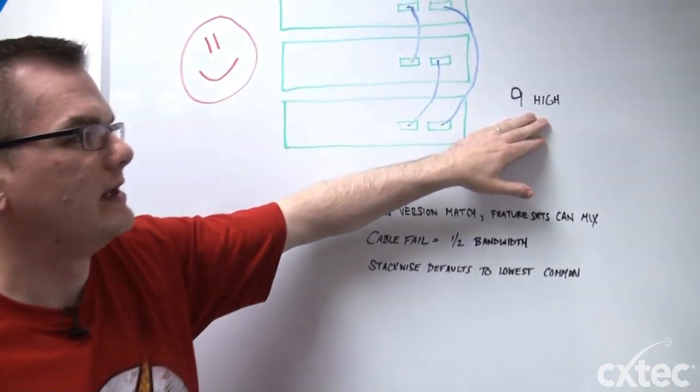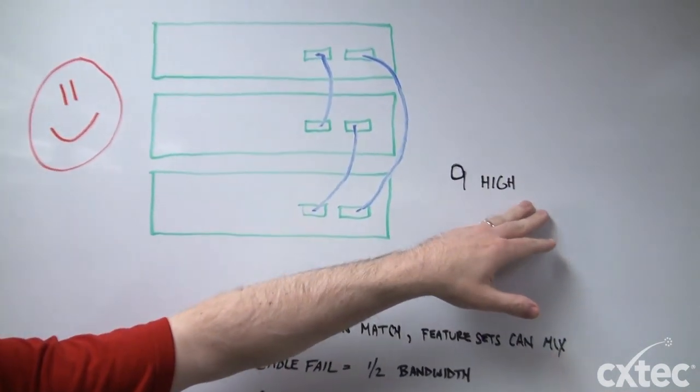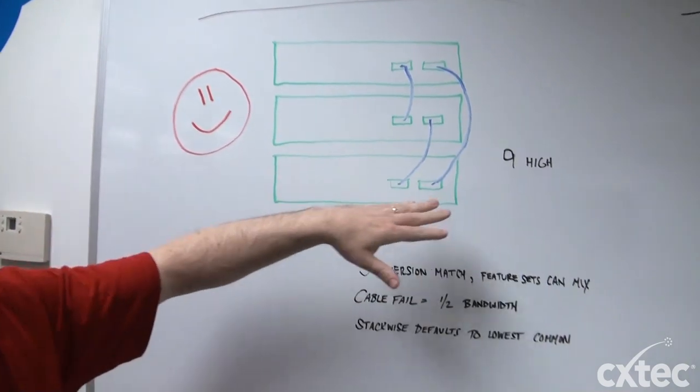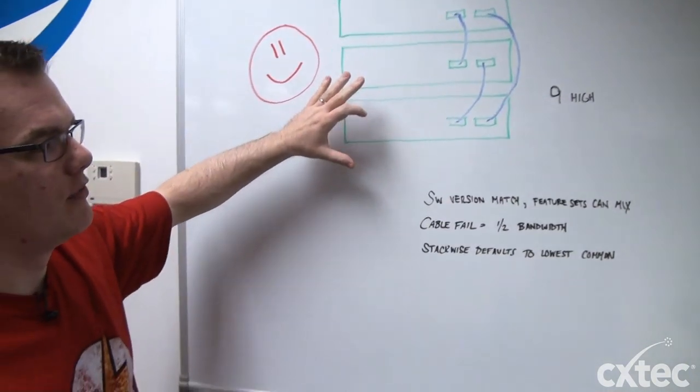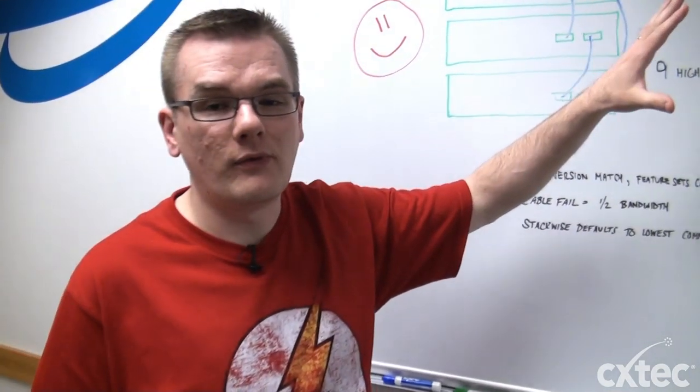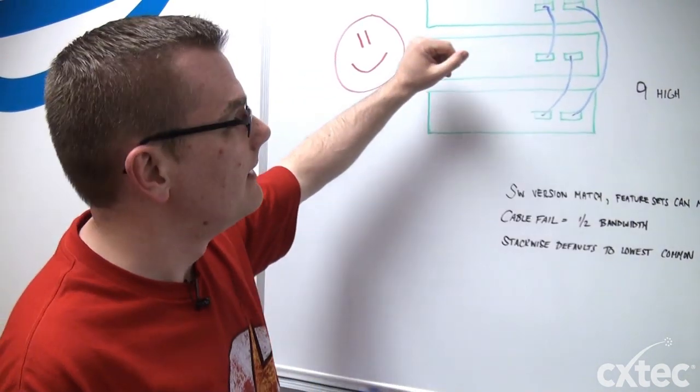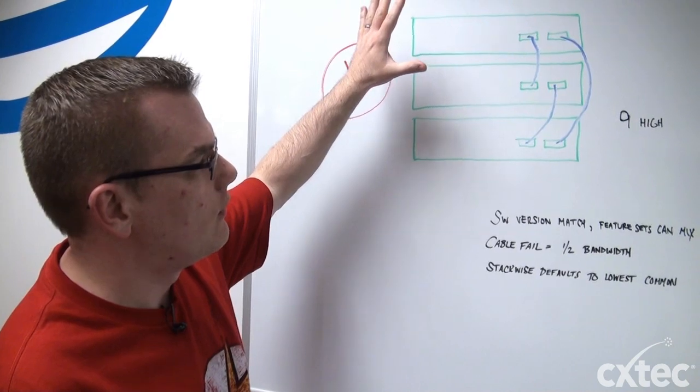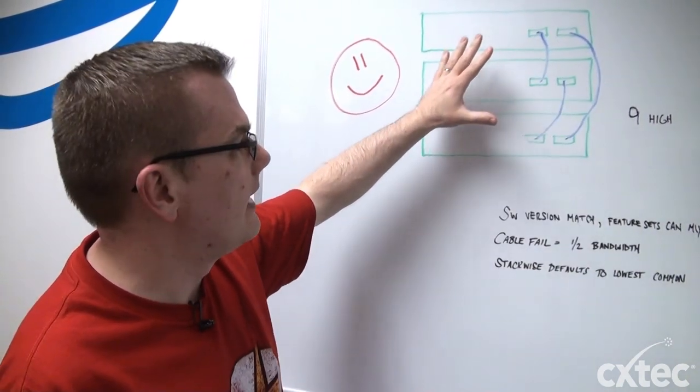You'll notice I have a note here that also says they can only be nine high at a maximum. They don't have to be nine high, of course. They can be just two switches together or up to nine. The higher that number grows, the lower the bandwidth will be available to the entire stack, but that's okay. This just keeps you from building the Tower of Babel or anything like that.